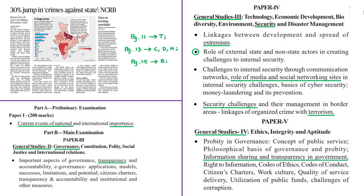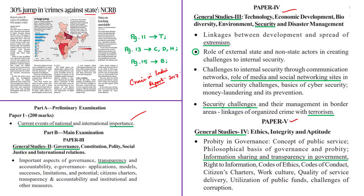This news article states that there is a 30 percent increase in the number of cases recorded as offenses against the state. This conclusion is based on the recent Crime in India report of 2017 released by the National Crime Records Bureau. Yesterday we discussed this report in detail and mentioned we would be getting frequent news articles regarding it. Today's article discusses offenses against the state, showing a 30 percent increase in cases in 2017 compared to 2016.